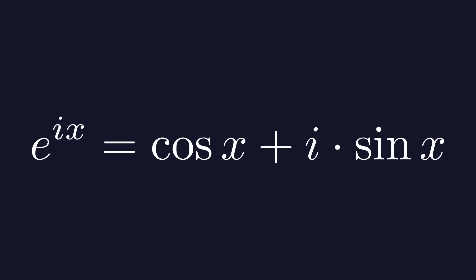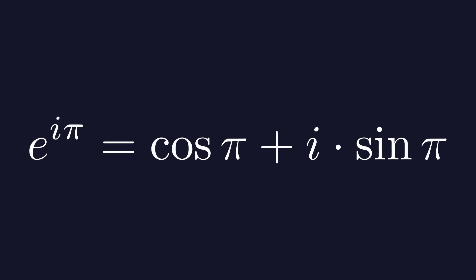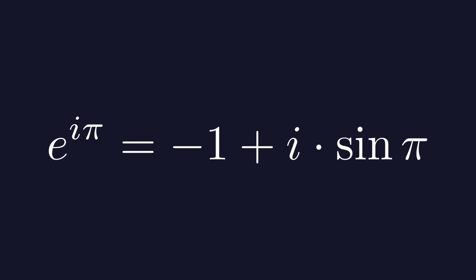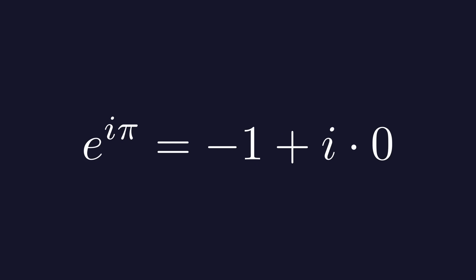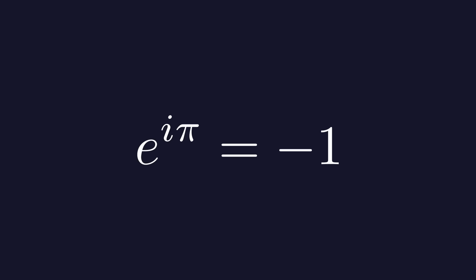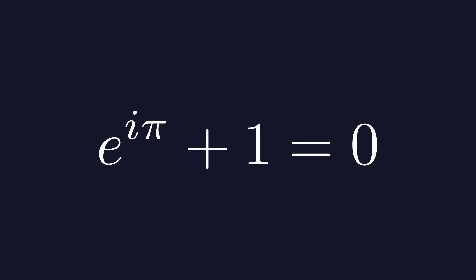Now, when we plug in pi for x, on the right side we get cosine of pi plus i times the sine of pi. Cosine of pi is equal to minus 1 and sine of pi is equal to 0. So on the right side, we are left with just minus 1. We can move the minus 1 to the left side of the equation. And that is Euler's identity: e to the power of i times pi plus 1 is equal to 0.